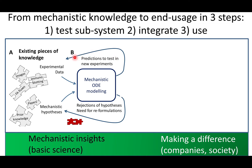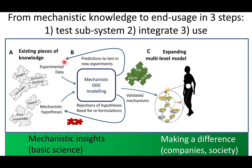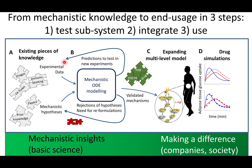Otherwise, we use simulations with uncertainty to do predictions that help us design new experiments with which to further test and validate the model. This is then integrated into the big picture and used for end-usage simulation, like drug simulations where we can simulate healthy responses, type 2 diabetes responses, and also improvements — going from mechanistic insights to making a difference in healthcare much faster.